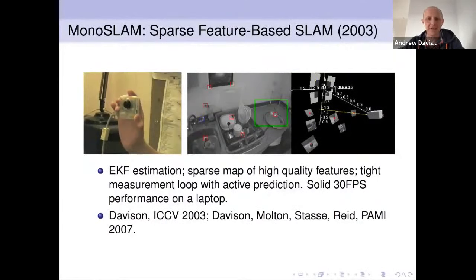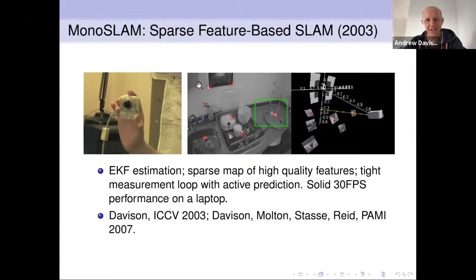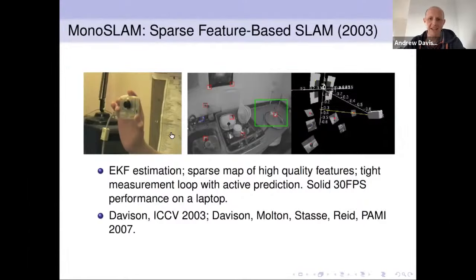Backing up a little bit to some history: I worked on sparse SLAM initially through my PhD in the 90s, where I built a visual SLAM system that ran on a robot. Then in 2003, I managed to make a single camera SLAM system — MonoSLAM — that works with just a single handheld camera in real time. The main goal was to accurately localize this camera at frame rate, 30Hz, as the camera moves around in a general indoor scene, by building a map of sparse landmarks.